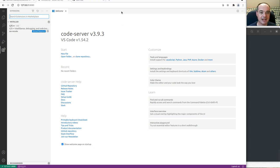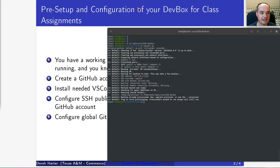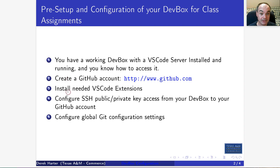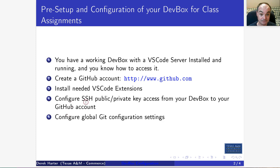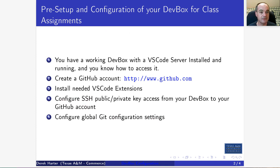Let that keep installing and we'll move on to the next thing. The rest of what we need to do is getting Git and GitHub set up to work from your Visual Studio Code dev box to your GitHub account. We need to configure a secure shell public-private key pair — specifically we need to add the public key from your dev box to your GitHub account — and we need to do some global git configuration.